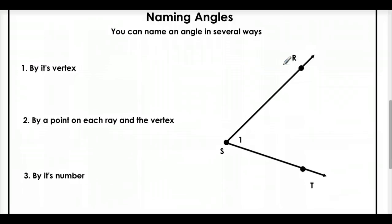Naming angles. Now, you can name an angle in four different ways. One, you can name it just by its vertex. Now, if you look, where's the vertex? That's the common endpoint. The vertex is right here. So we could just call this angle S. That's one way to name this angle.